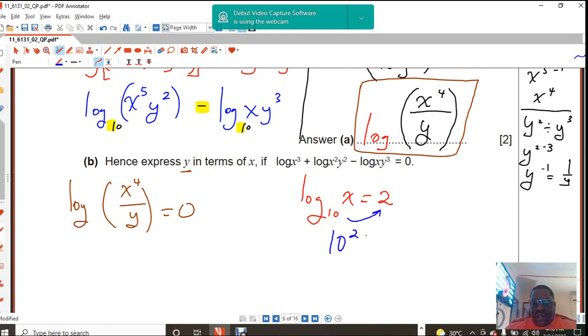So that 10 kicks up that 2. Therefore our x will be 10 times 10, leaving x equals to 100 for example. So I'm going to use that same reasoning here.